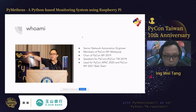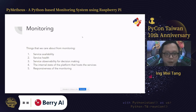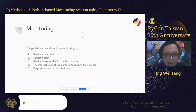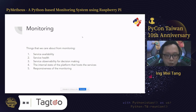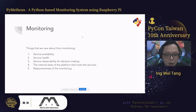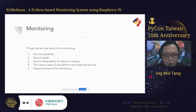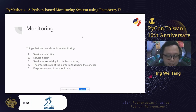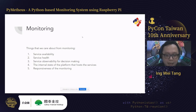Since we're talking about monitoring, what do we know about it? Monitoring helps us look at a few aspects of a system or services — particularly service availability, service health, and what we now call observability. Observability is used not just for debugging and logging, but also for making decisions on whether to expand or scale the system. We also want to know the internal state of services hosted on our platforms, whether in cloud or on-premise, and how responsive the monitoring data is in providing insights and alerts.